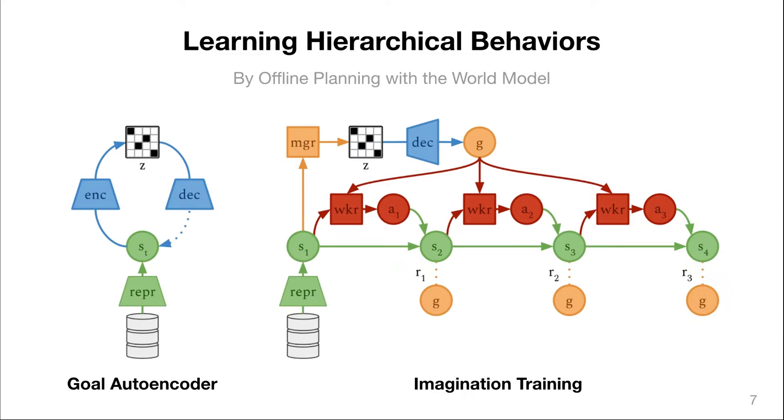For the exploration reward, we simply use the reconstruction error of the goal autoencoder at each time step, which we found to be a simple and effective solution for high-level exploration.